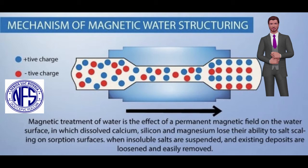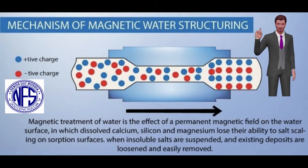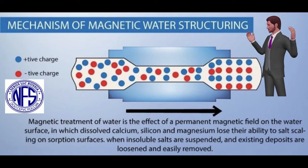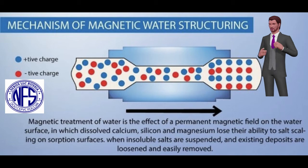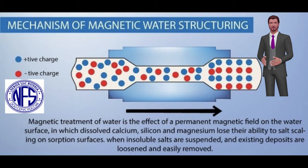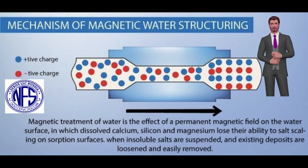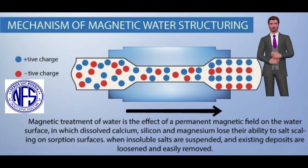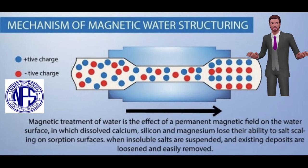Water softening is commonly used to reduce hard water's adverse effects. Water's hardness is determined by the concentration of multivalent cations in the water. Multivalent cations are positively charged metal complexes with a charge greater than 1+. Usually the cations have the charge of 2+. Common cations found in hard water include Ca2+ and Mg2+. These ions enter a water supply by leaching from minerals within an aquifer.